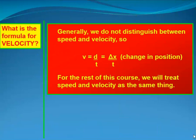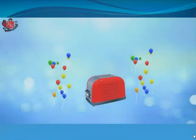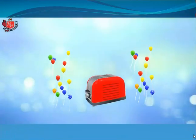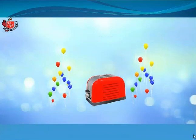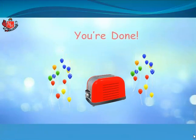Generally, we do not distinguish between speed and velocity in this class. The formula v equals d over t, or more precisely delta-x over t for straight-line displacement, is what we will use. For the rest of the course, we will treat speed and velocity as the same thing for the most part. That takes care of our lesson on speed and velocity.